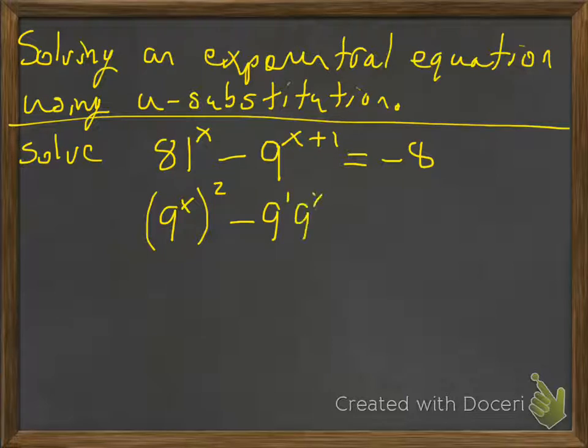And multiplication is commutative, so I'm going to sneak that 9 out in front. So it'll be 9 to the first, and then 9^x. Because I'm efficient, I'm going to add 8 to both sides of my equation.